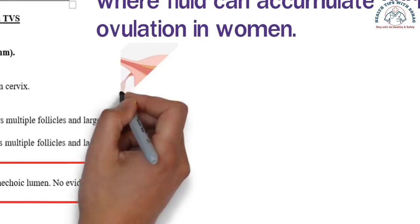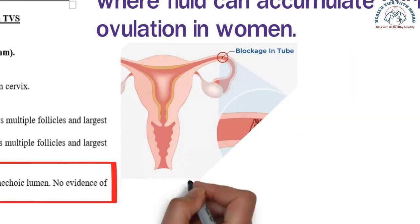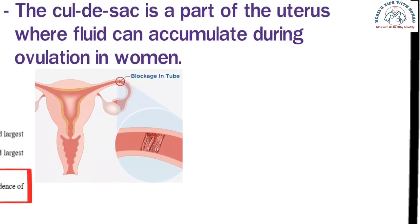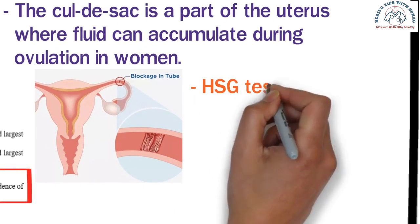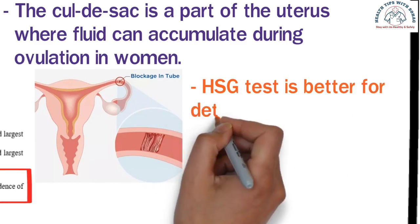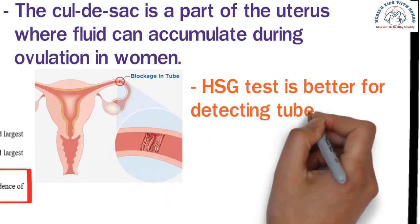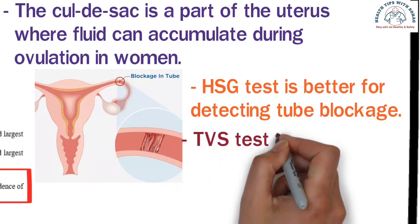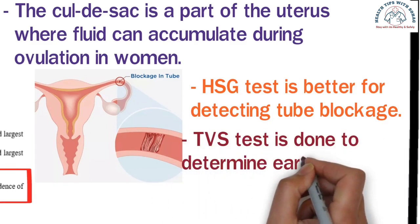Number 4: Fallopian tube. After ovulation, the egg travels through the fallopian tube from the ovary and meets with the sperm. If there is any blockage in the fallopian tube, conception does not occur. Fallopian tube blockage can be seen through a TVS test, although an HSG test is better for detecting tube blockage. Additionally, a TVS test is done to determine early pregnancy.